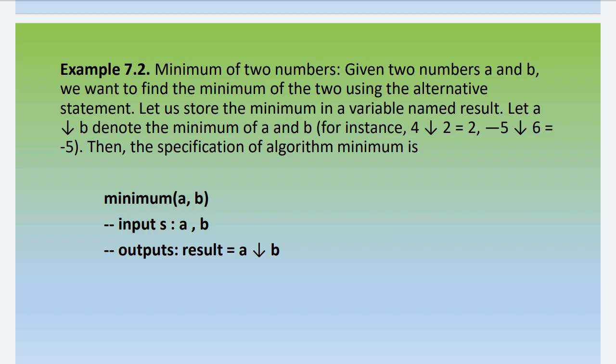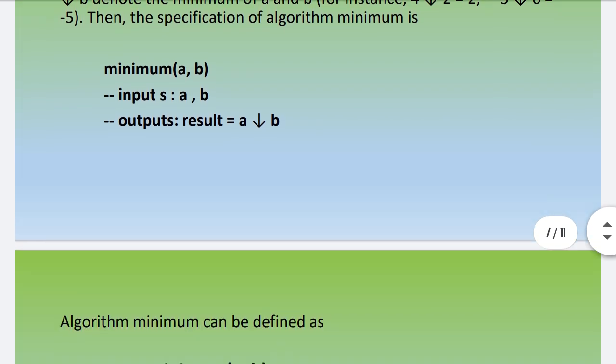The input here is a and b. The output is result — whatever the minimum value of a and b is, that will be stored in the result variable. Looking at the complete algorithm: minimum(a, b). Using a statement, the minimum value is stored in a variable. We check: if a is less than b, then result stores the value of a.